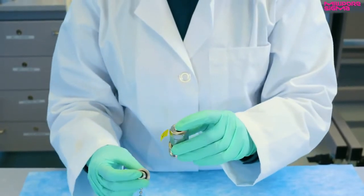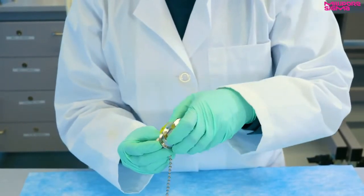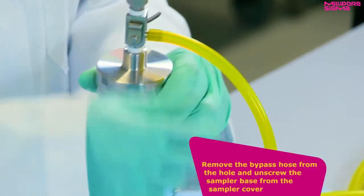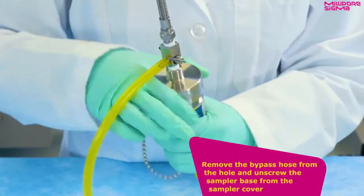Similarly, replace the protective cap on the sampling port. Remove the bypass hose from the hole and unscrew the sampler base from the sampler cover.